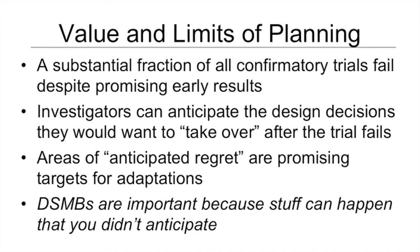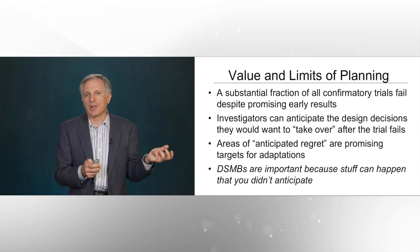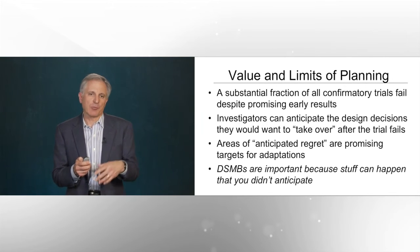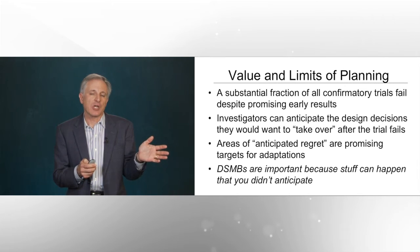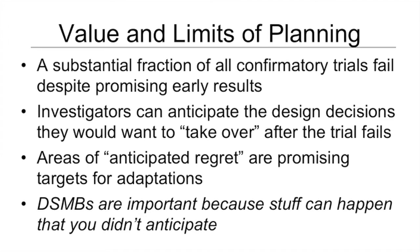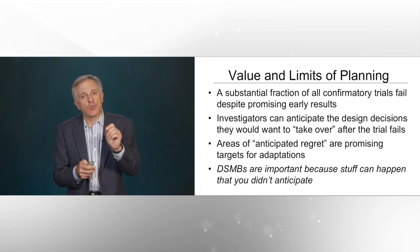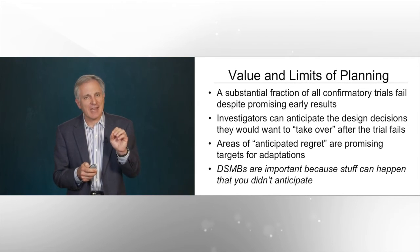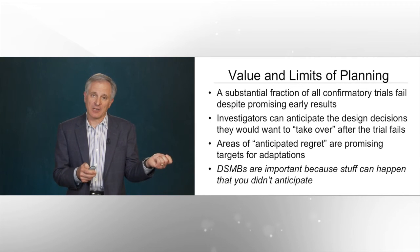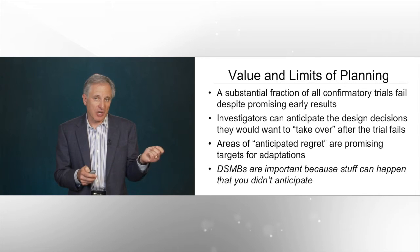When one reflects on the recent history in clinical trials, we realize that a substantial fraction of all confirmatory trials fail even though they were designed based on promising early results. Investigators can often anticipate the design decisions they wish they could change if a trial were known to have failed. These are areas we call anticipated regret that are the targets for adaptation. For example, if you're testing a drug at a given dose and you knew that it failed to demonstrate efficacy, one might wish that we had tested a higher dose. A good adaptive design would take that into account and automatically allow a dose escalation should the safety profile of the lower dose be adequate. The reason oversight from the DSMB is important is because stuff can happen during the conduct of a trial that wasn't anticipated and therefore was not taken into account during the design and simulation of the adaptive trial.